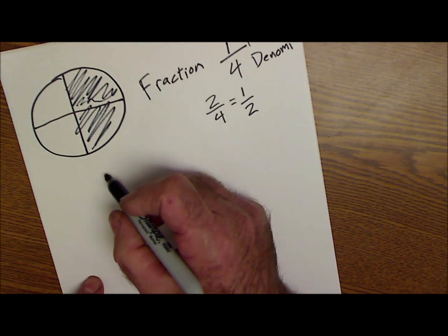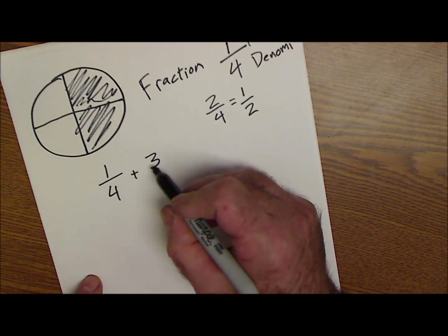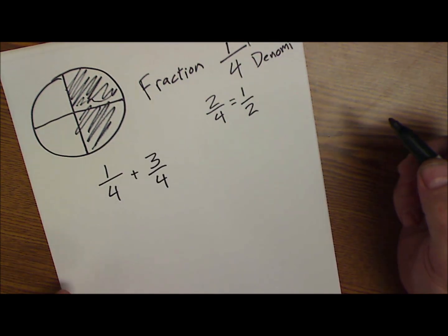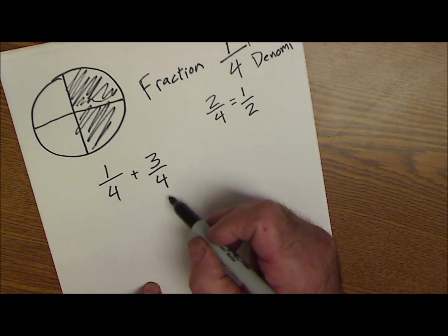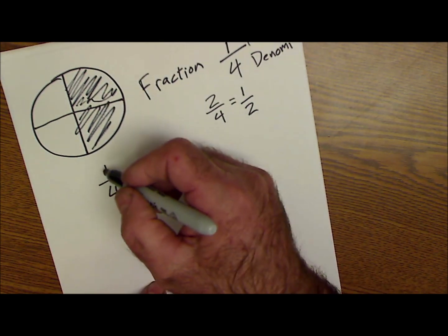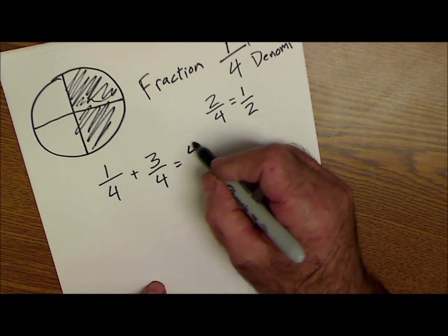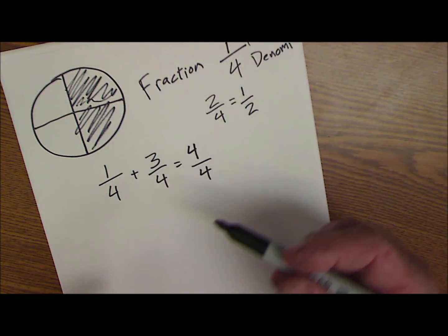So if I have a fraction that's one-fourth plus three-fourths, the rule on adding and subtracting fractions is the bottom number has to be the same, and then you just add straight across the top. So one plus three is equal to four, and you keep the bottom number, and that kind of makes sense, right?